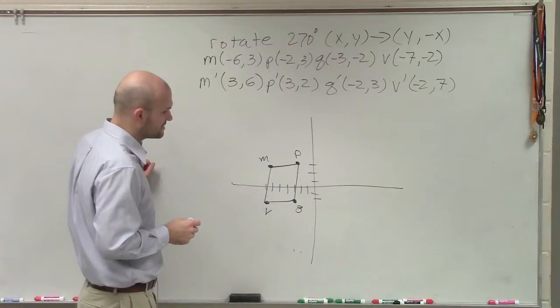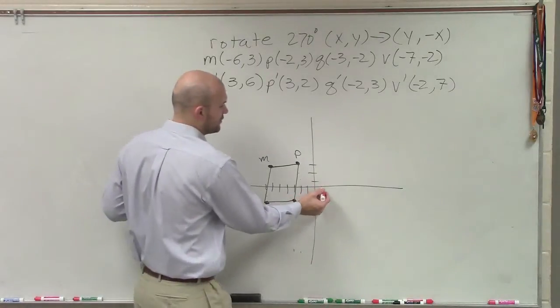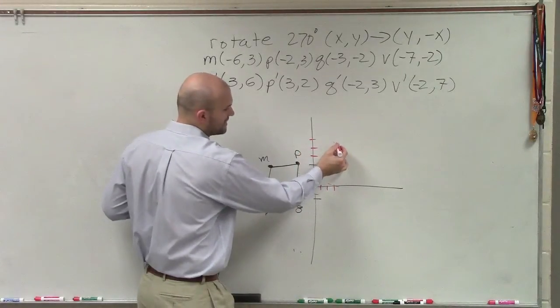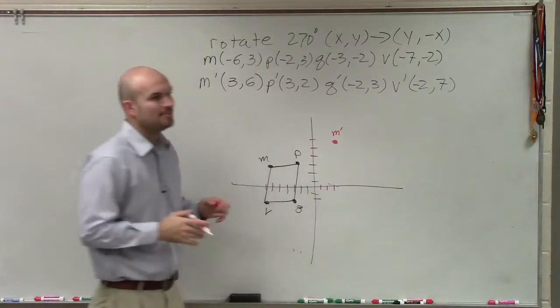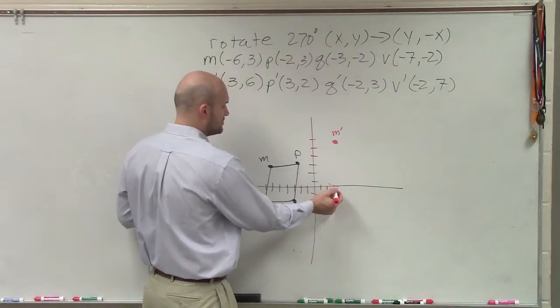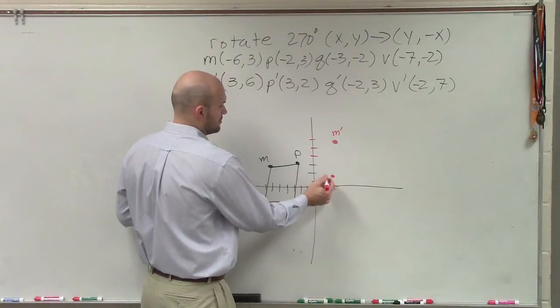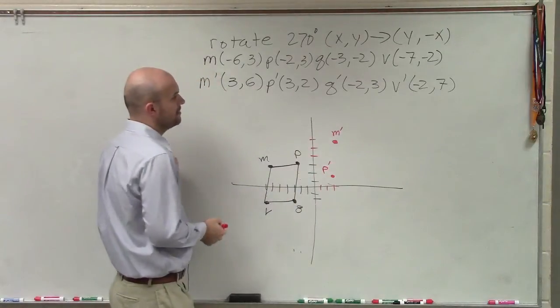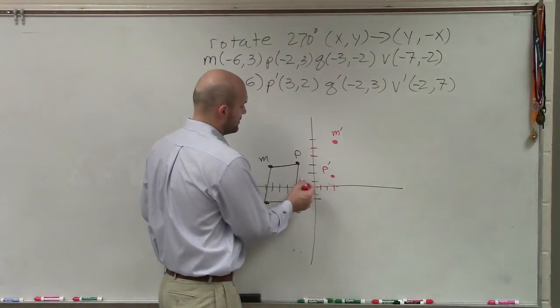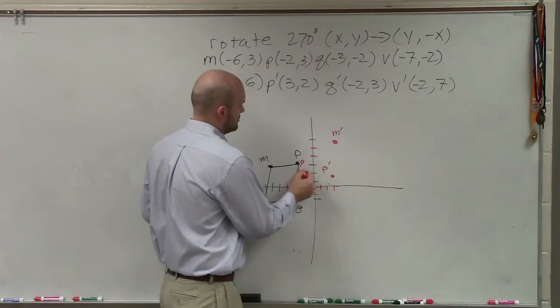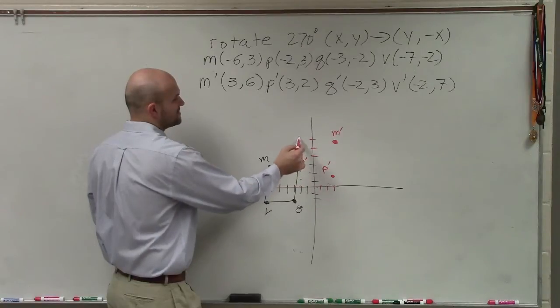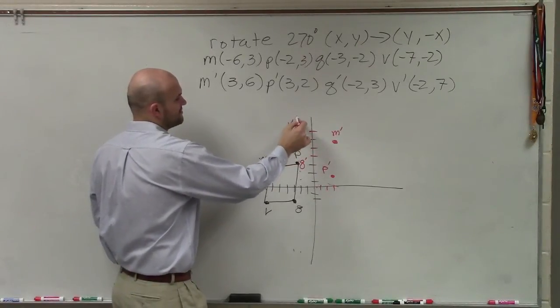So m is going to be 3 comma 6. So I go over 1, 2, 3, and then up 6. 1, 2, 3, 4, 5, 6. So now that's going to be my new point m. And I label my new point m, m prime. Then I go in p, which is going to be 3 comma 2. So that's going to be p prime. Then I have q, which is negative 2, 3, 1, 2, and then up 3. 1, 2, 3. And then I have negative 2, 7. 1, 2, 3, 4, 5, 6, 7. And that's v prime.